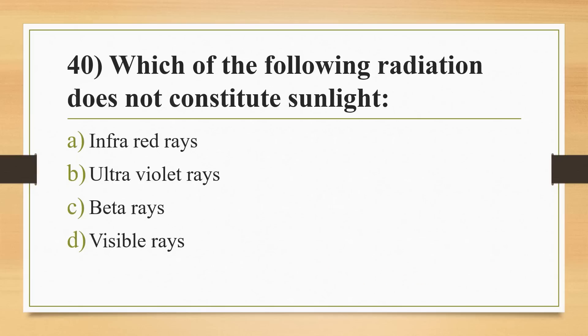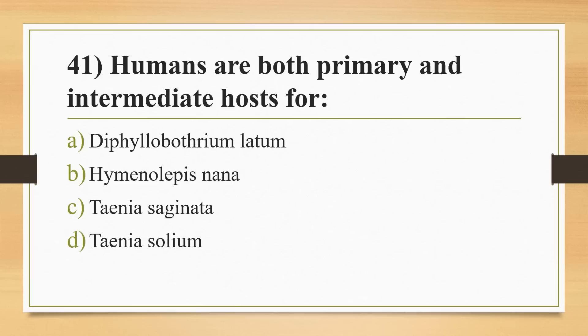Question 40: which of the following radiation does not constitute sunlight? Options: infrared rays, ultraviolet rays, beta rays, or visible rays. Answer is Option C, beta rays. Question 41: humans are both primary and intermediate hosts? Options: Diphyllobothrium latum, Hymenolepis nana, Taenia saginata, or Taenia solium. Answer is Option B, Hymenolepis nana.